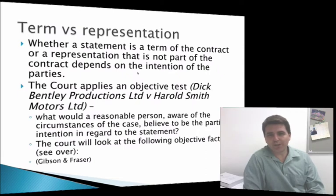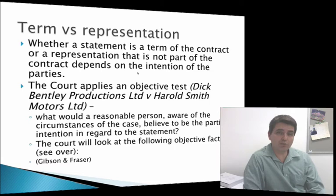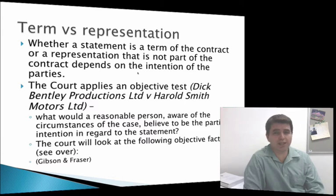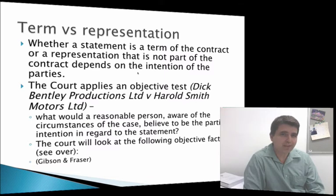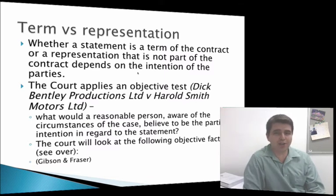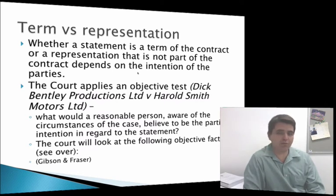How does the court determine whether something is a term or a representation? To do that it looks at the intent of the parties — what did they intend? Did they intend this to be a term of the contract or not? There are some essential elements to working out that intention, and the first thing to note is that this is an objective test. That means it's not what the parties actually thought; it's what a reasonable person would think.